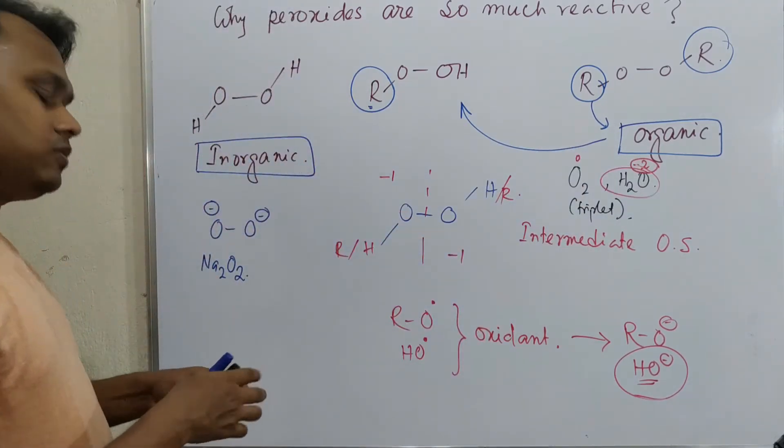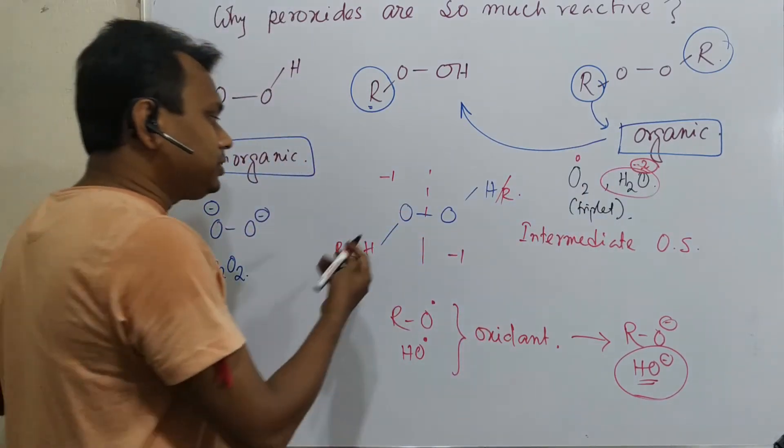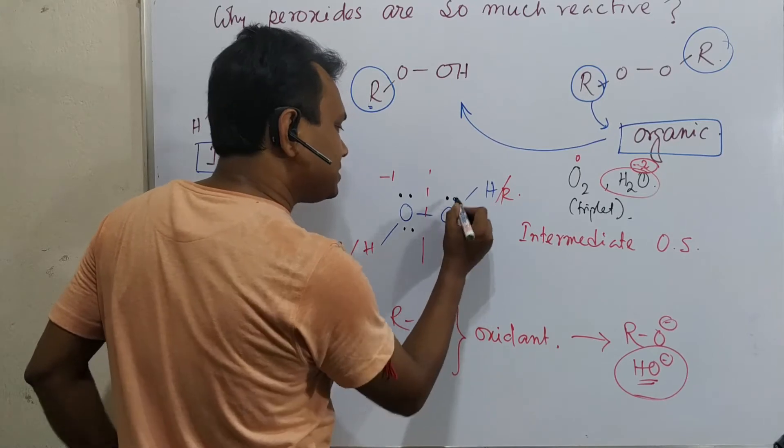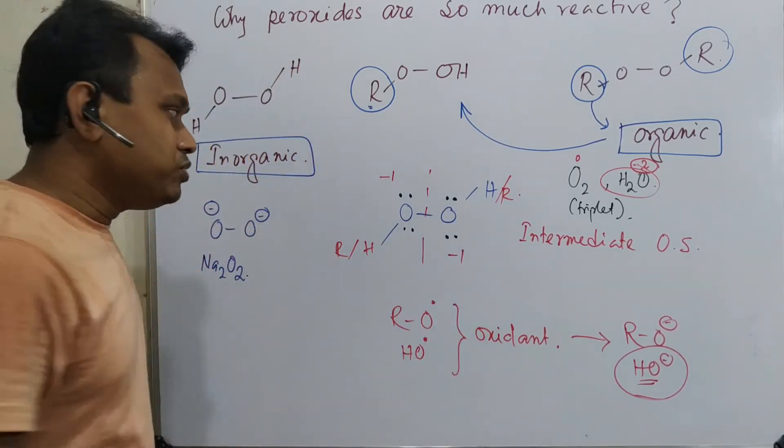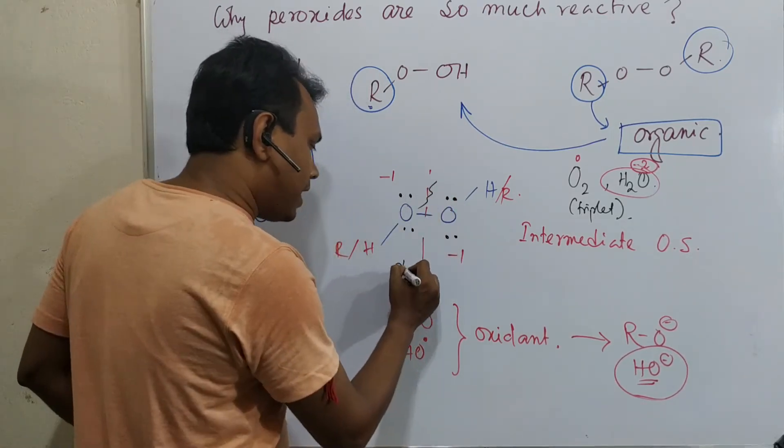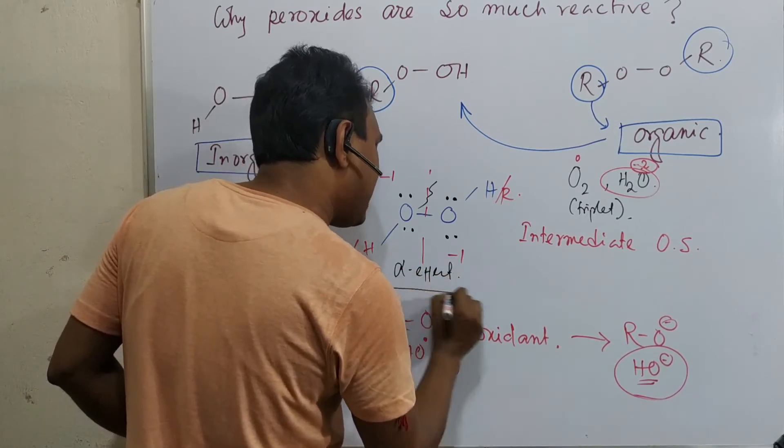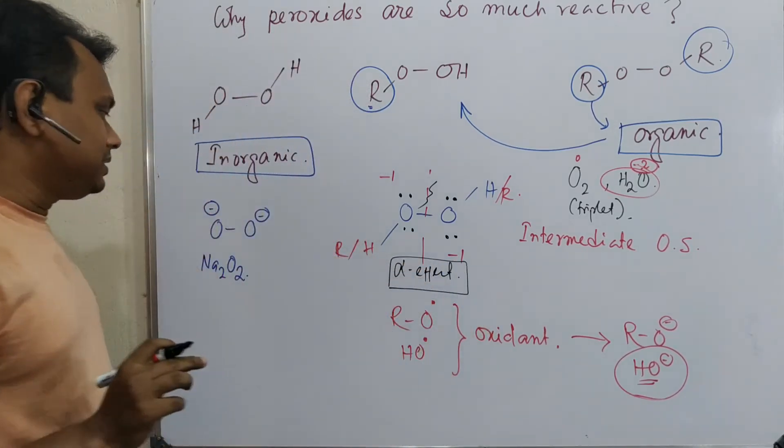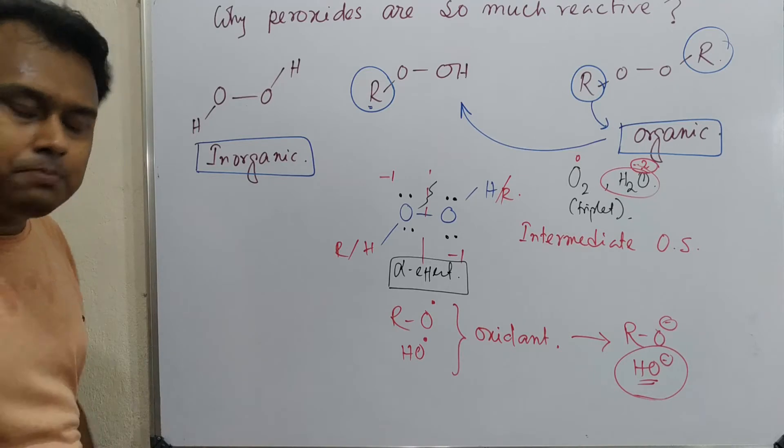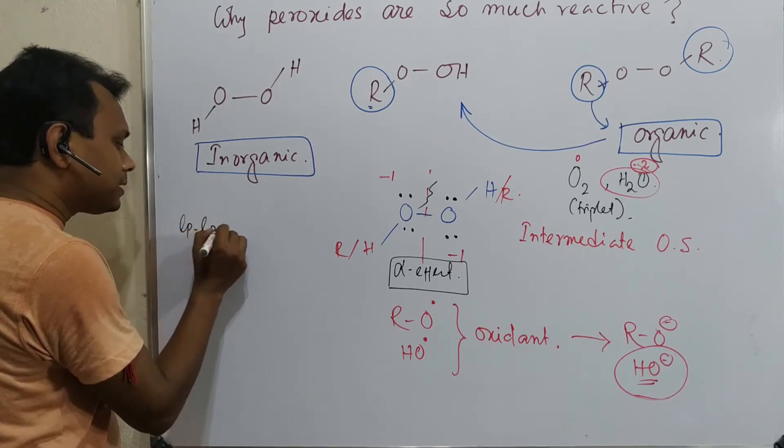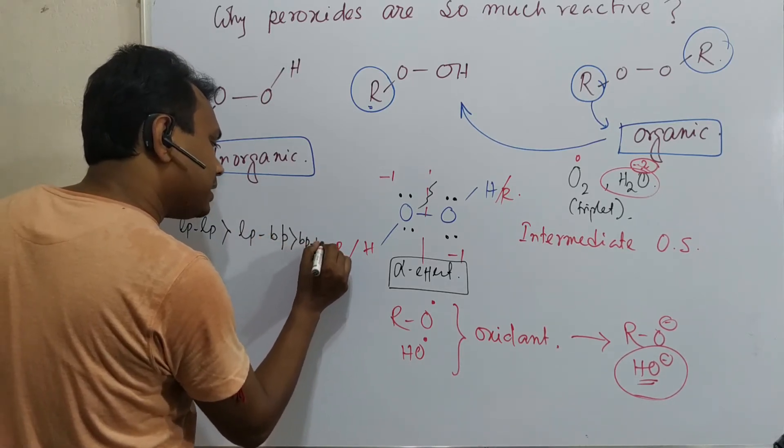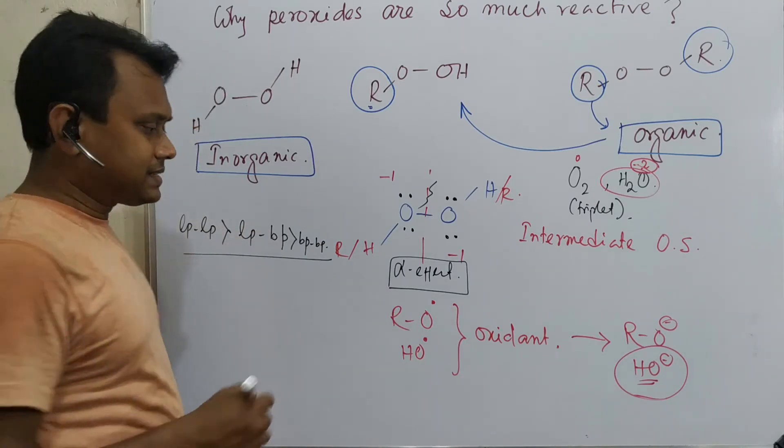Now we understood, but the question is: why is this abnormal phenomenon observed? This is because if you look at the Lewis dot structure, there are actually two pairs of electrons on each oxygen, and they are adjacent to each other. That's why they have a repulsive interaction, which is known as the alpha effect. Because of this, they are more reactive. Now, you may think: is lone pair-lone pair repulsion really that significant? Obviously, yes. If you look at VSEPR theory, lone pair-lone pair repulsion is greater than lone pair-bond pair repulsion, which is greater than bond pair-bond pair repulsion.